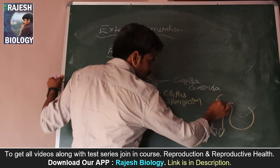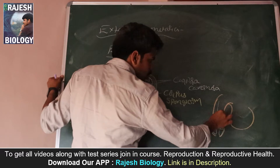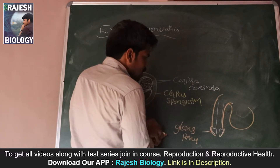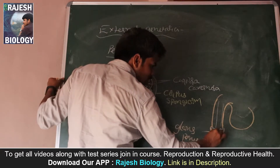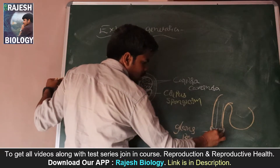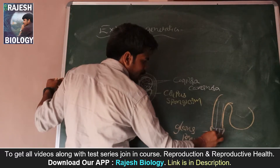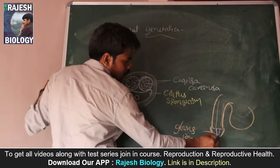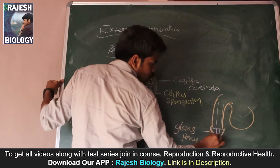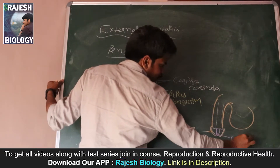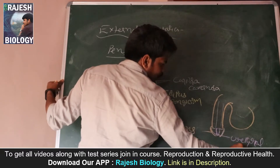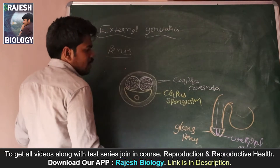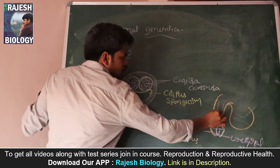Within the corpus spongiosum, the urethra is also present inside. At the site of the glans penis, the urethra also becomes swollen. And at the tip of the penis, the urethra opens out. The opening of the urethra is called the urethral meatus.